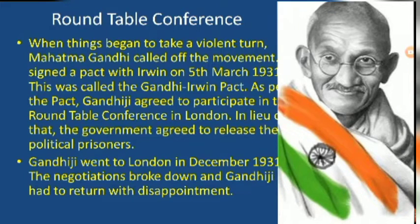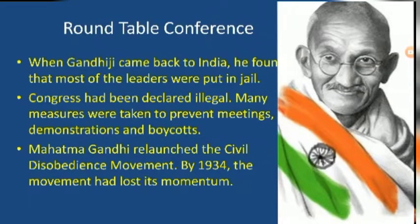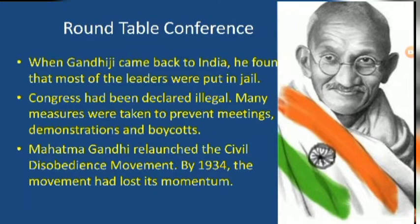Gandhiji went to London in December 1931, but the negotiations broke down and he had to return with disappointment. When Gandhiji came back to India, he found that most leaders had been put in jail and Congress had been declared illegal. Many measures were taken to prevent meetings, demonstrations, and boycotts. Mahatma Gandhi relaunched the Civil Disobedience Movement, but by 1934 the movement had lost its momentum.